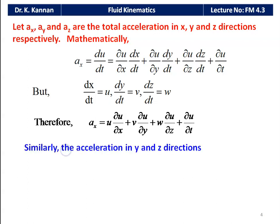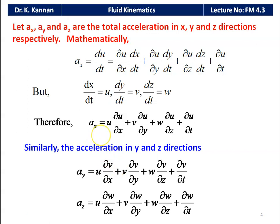Similarly, we can write in the y and z directions: ay = u(∂v/∂x) + v(∂v/∂y) + w(∂v/∂z) + ∂v/∂t, and az = u(∂w/∂x) + v(∂w/∂y) + w(∂w/∂z) + ∂w/∂t. These three equations are important to remember.